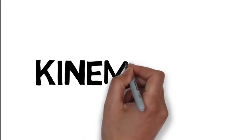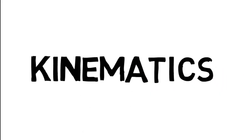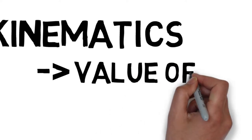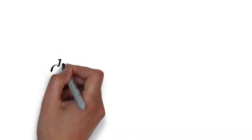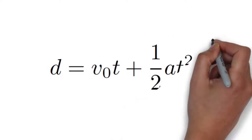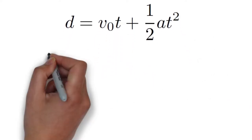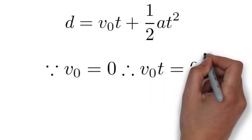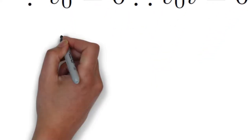For this freefall experiment, we use kinematics to determine the value of g from the time it takes an object to drop and the height from which it was dropped. We know from kinematics that d equals v₀t plus one-half at squared. If we're dropping an object from rest, then we can eliminate v₀t because v₀ is zero. Then we're left with d equals one-half at squared.